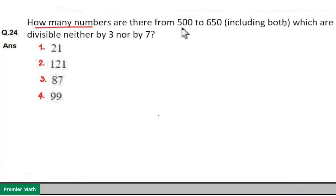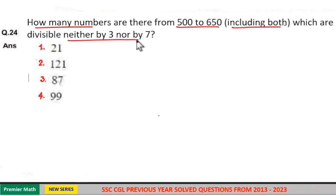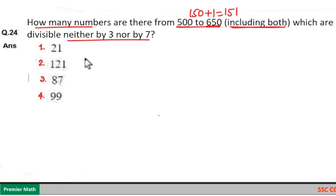How many numbers are there from 500 to 650, including both, which are divisible neither by 3 nor by 7? The total numbers from 500 to 650 is 650 minus 500, which is 150 numbers. This 150 includes 650. But the question says including both, which means 150 plus 1 equals 151 numbers, including both 500 and 650.